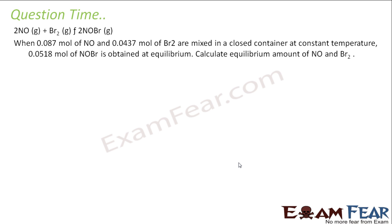So 2NO react with Br2 gives 2NOBr, all in gas. When 0.087 mol of NO and 0.047 mol of Br2 are mixed in a closed container at a constant temperature, 0.0518 mol of NOBr is obtained at equilibrium. Find the equilibrium amount of NO and Br2. Similar step, similar approach we will find. We have 2NO, we have Br2, it becomes 2NOBr. Initial state, we have 0.087 mol of NO, and 0.047 mol of Br2, and at t equals 0 this is zero.